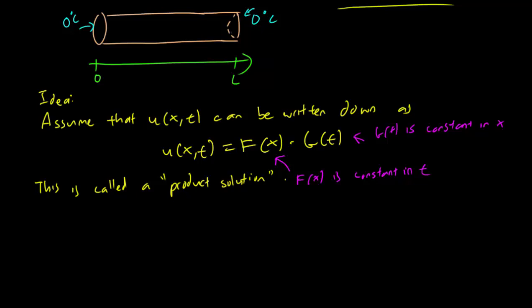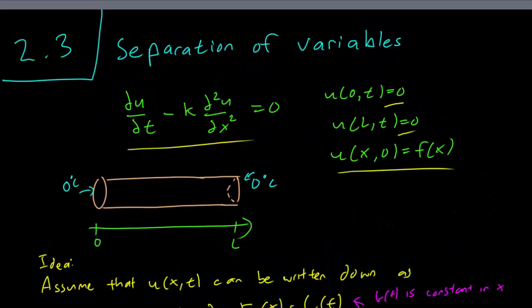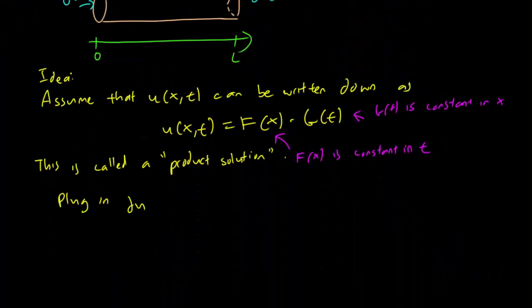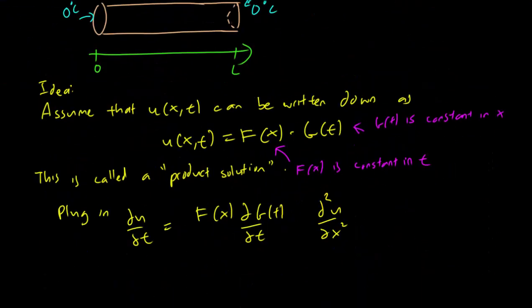So let's see what happens when we plug it in. So we plug in to our original problem. So we have it here and what we get is ∂u/∂t is equal to F(x) ∂G/∂t. And of course, the second derivative that's on this side is going to be G(t) times the second derivative of x.